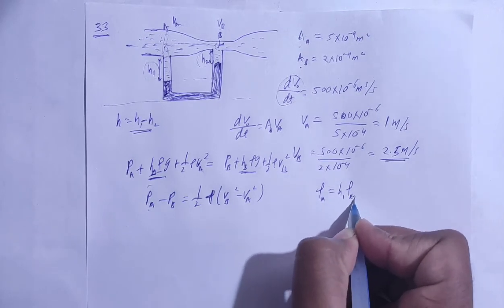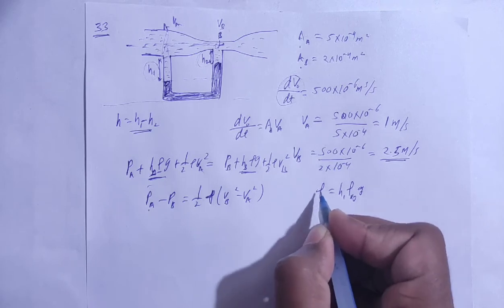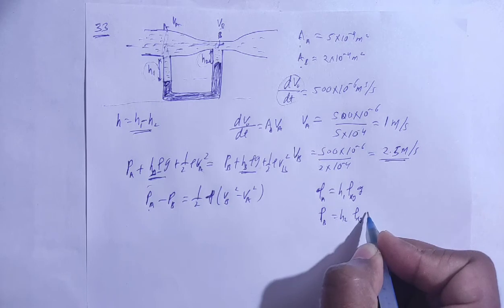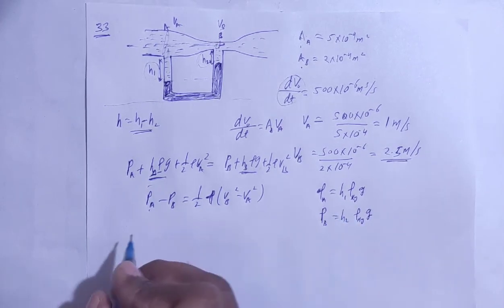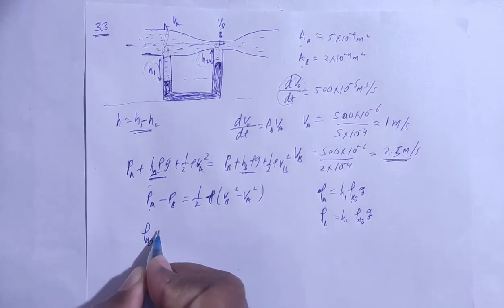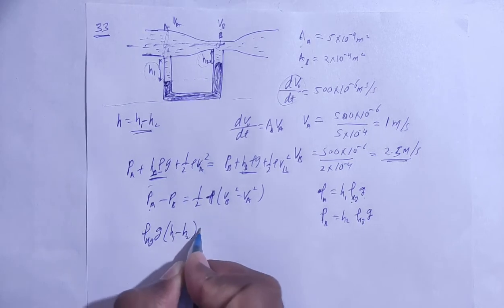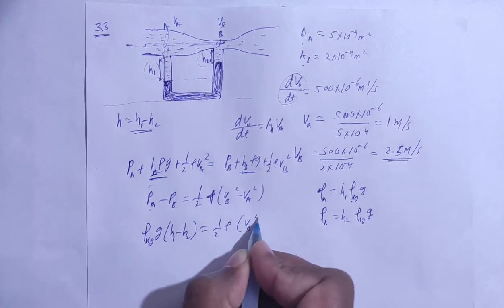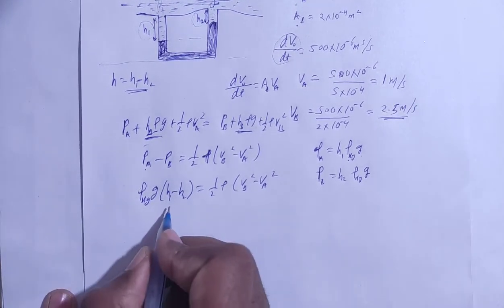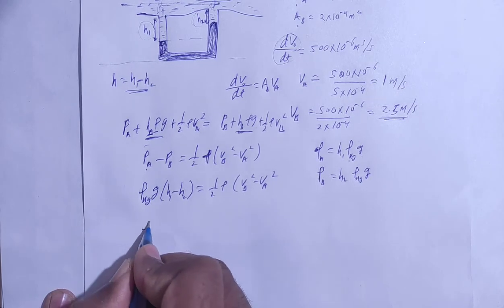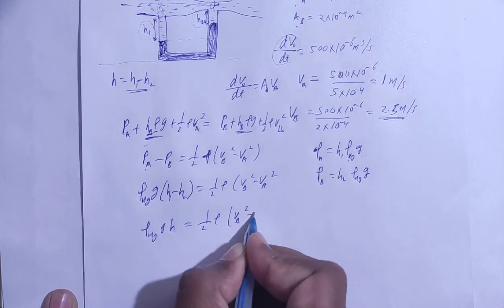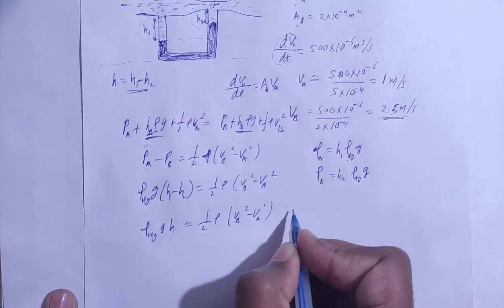The pressure at A in terms of the mercury column is PA = P + ρ_mercury × g × H1, and the pressure at B is PB = P + ρ_mercury × g × H2. Substituting and simplifying, the common terms cancel, giving: ρ_mercury × g × (H1 − H2) = ½ρ_water × (VB² − VA²).